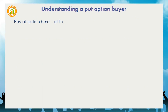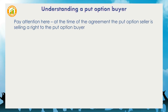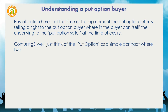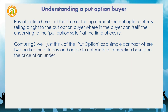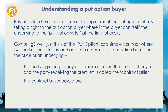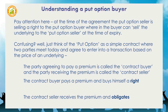Pay attention here: at the time of the agreement, the put option seller is selling a right to the put option buyer wherein the buyer can sell the underlying to the put option seller at the time of expiry. Just think of the put option as a simple contract where two parties meet today and agree to enter into a transaction based on the price of an underlying. The party agreeing to pay a premium is called the contract buyer, and the party receiving the premium is called the contract seller. The contract buyer pays a premium and buys himself a right; the contract seller receives the premium and obligates himself.